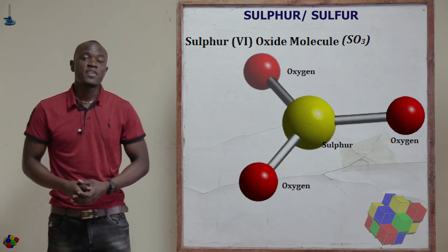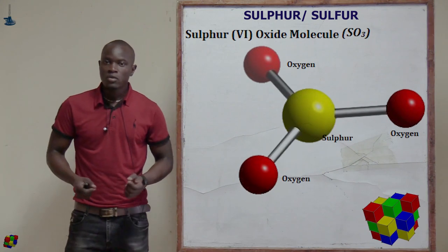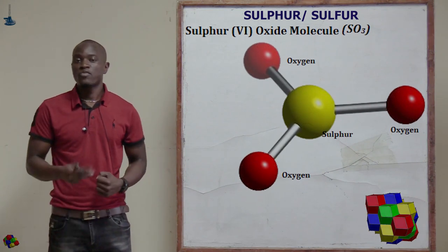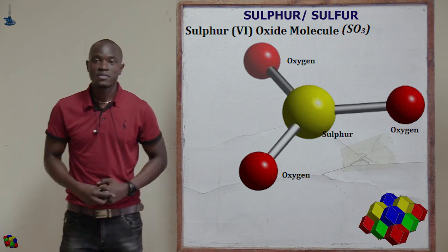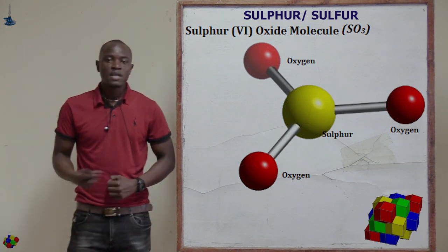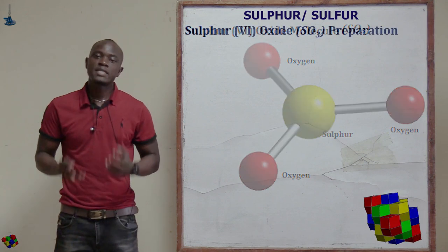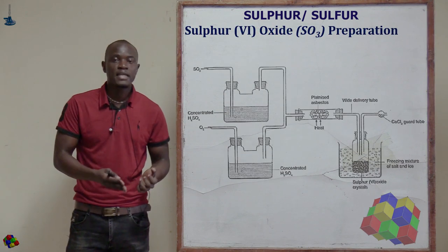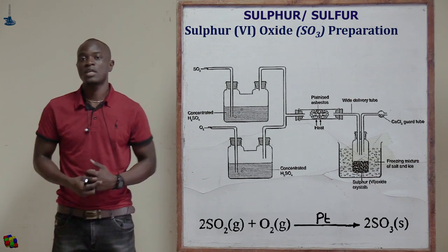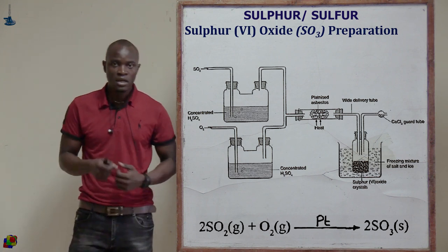Let's now look at sulfur 6 oxide. This is the other oxide of sulfur, apart from sulfur 4 oxide. Sulfur 6 oxide is basically formed when sulfur 4 oxide is reacted with excess oxygen in the presence of a suitable catalyst.